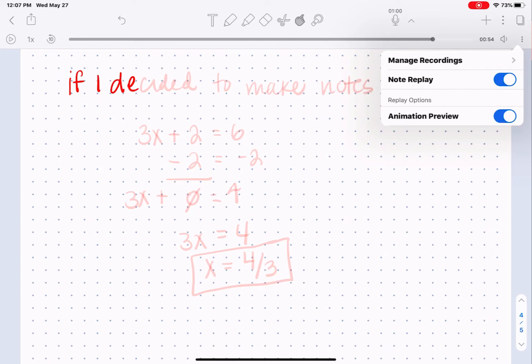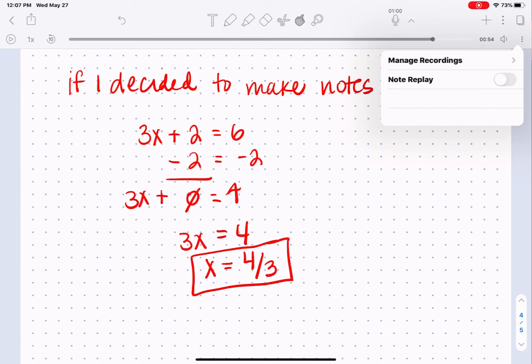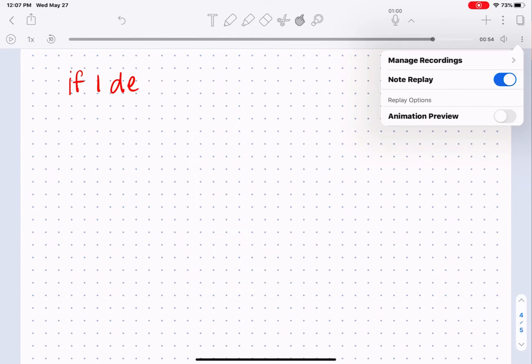And you can toggle on and off the note replay in the animation preview. So if I toggle note replay off, it's not going to highlight my notes as I go. And then the next option animation preview, if I toggle that off, it's not going to show me what's waiting to be written.